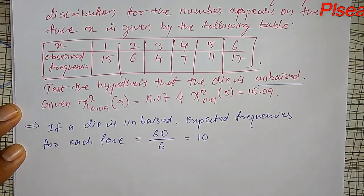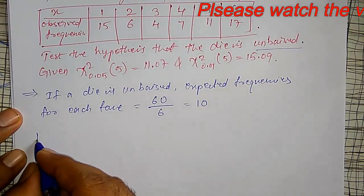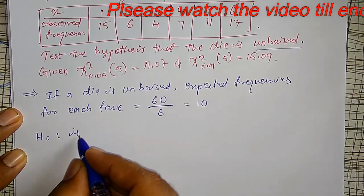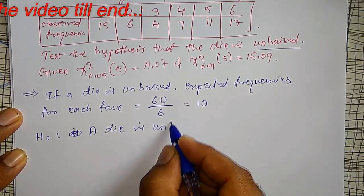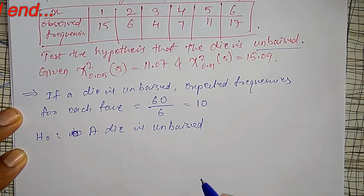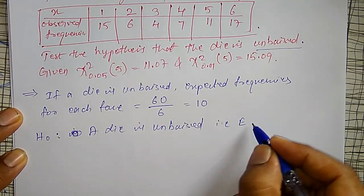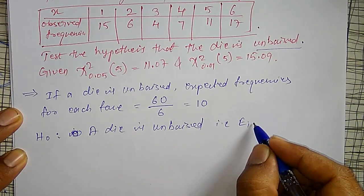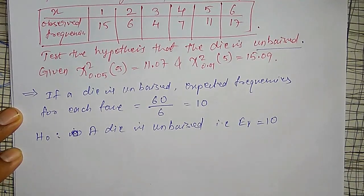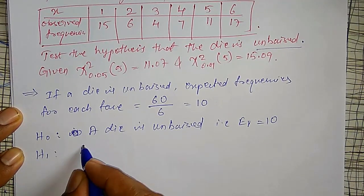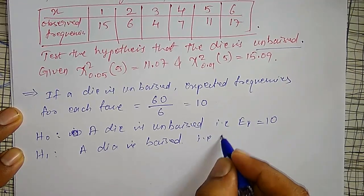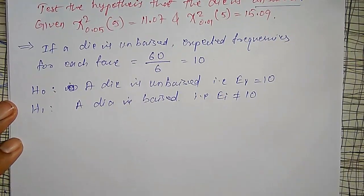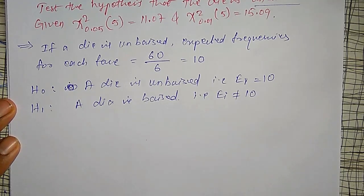The null hypothesis H0 is: the die is unbiased, i.e., Ei = 10 for each face. The alternate hypothesis H1 is: the die is biased, i.e., expected frequencies are not equal to 10. To calculate the chi-square value, I will set up a table for easy calculation.